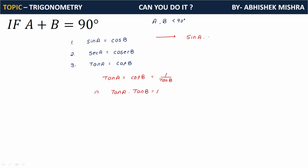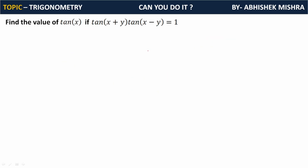We can also write that sine A · sec B equals 1, and sec A · sine B equals 1. These are the three important formulas to remember; other formulas you can derive easily.